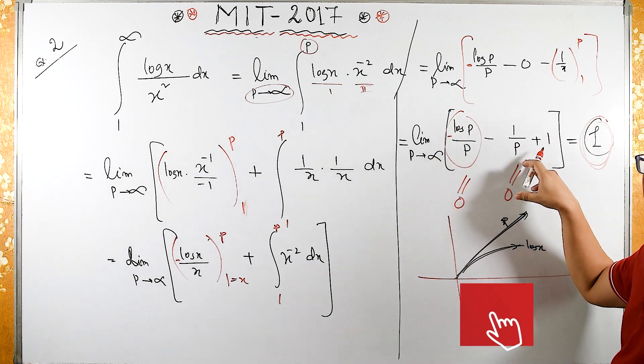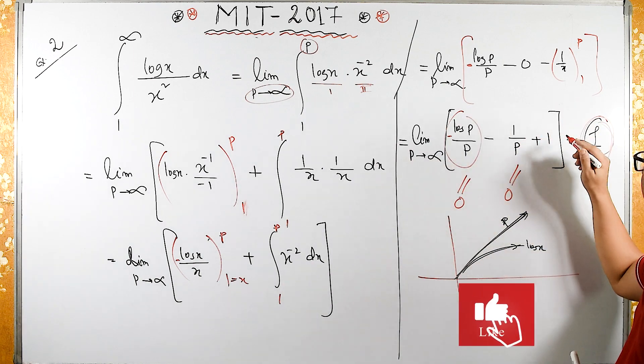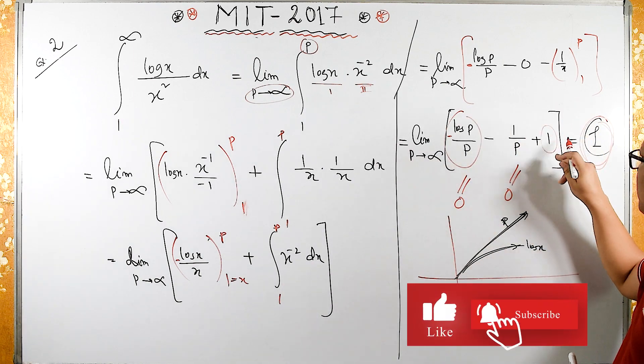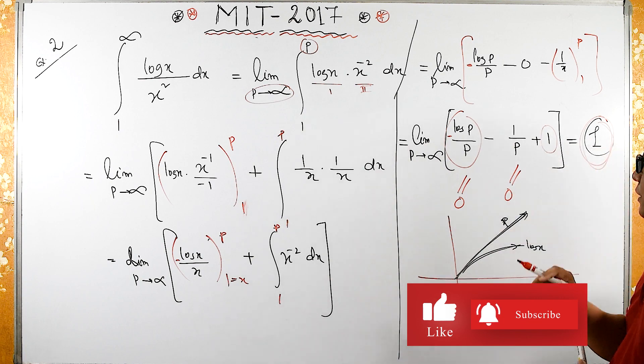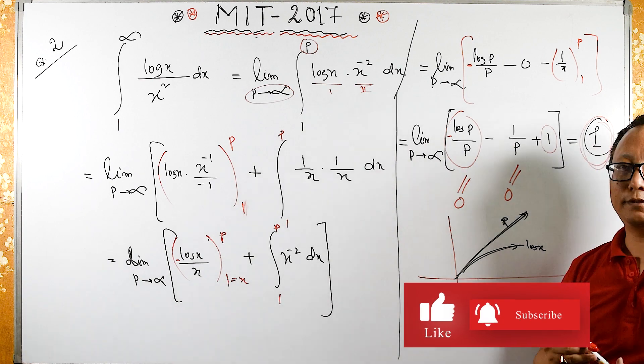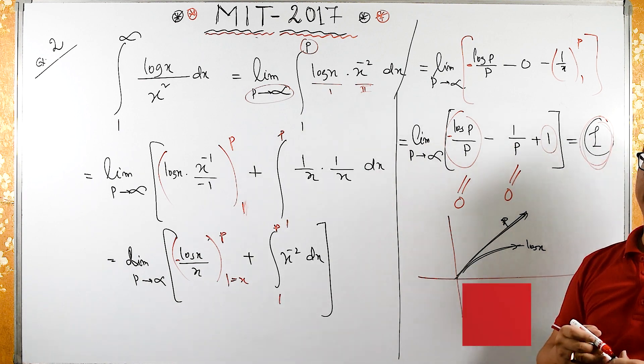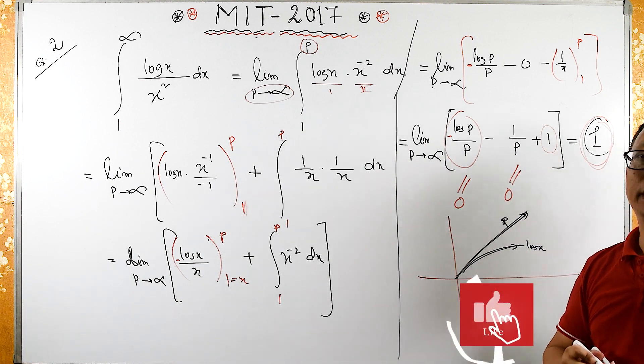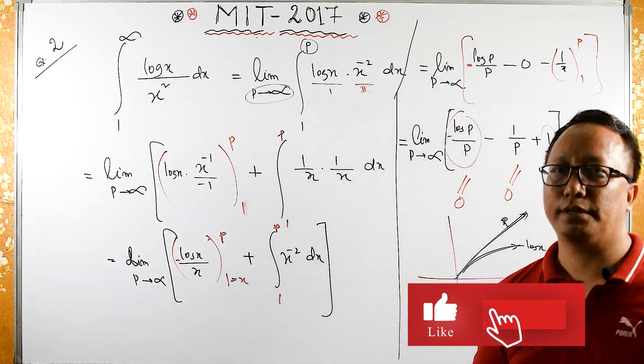So this value becomes 0 and this also becomes 0 — we only have 1 remaining. So the answer is 1. If you like this video, please like and share. Thank you for your support.